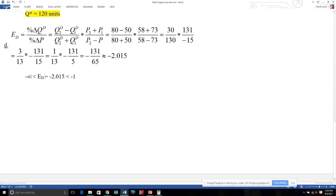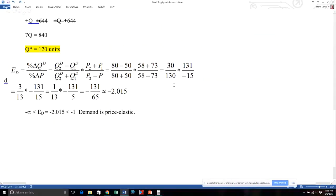I'm going back to this Word document. Since E sub D, which is equal to negative 2.015, is to the right of negative infinity but to the left of negative 1, demand is price elastic. Please do not say demand is elastic, because demand could be income elastic, demand could be cross price elastic. You have to be specific. E sub D stands for price elasticity of demand, so you have to use the word price elastic. This fulfills the last part of our answer and we're now done with this example math problem.